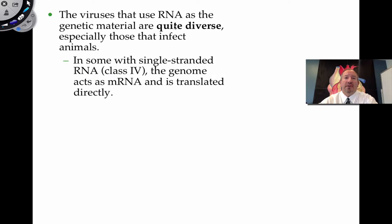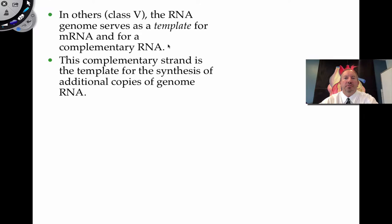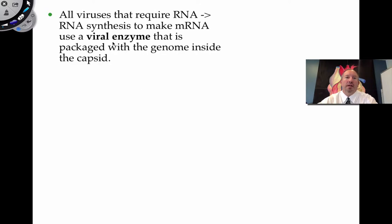Depending on the nucleic acid, viruses use different means of replication — this is part of the diversity. In some cases, if the RNA is single-stranded, the genome itself acts as the messenger RNA and is translated directly when it enters the cell. In other cases, the RNA genome serves as a template and is transcribed into messenger RNA, which can then be used to make more copies of the genome. In still other cases, RNA can make messenger RNA used to produce viral enzymes.